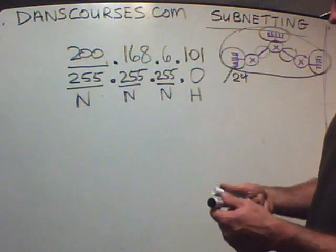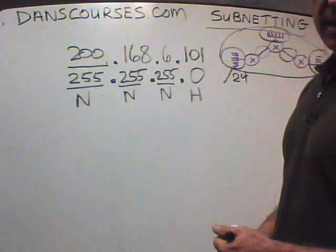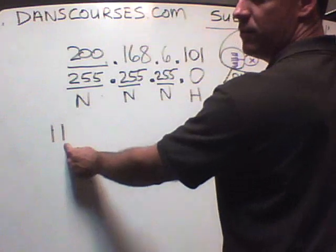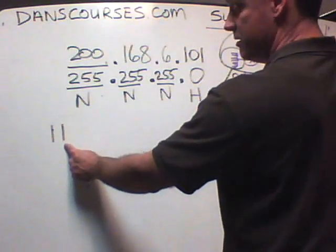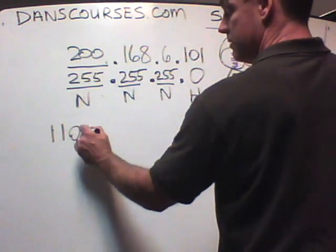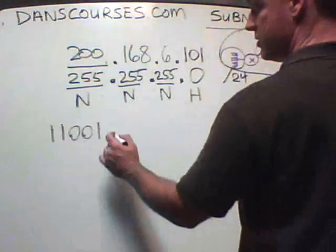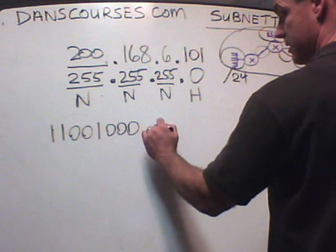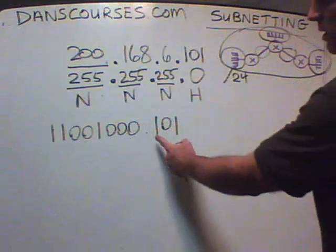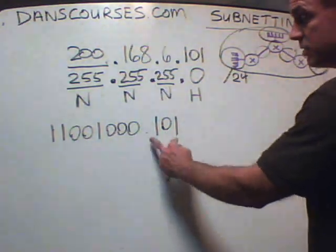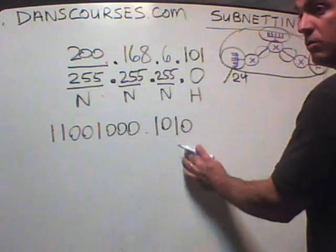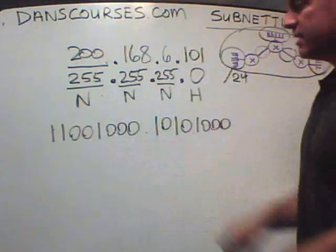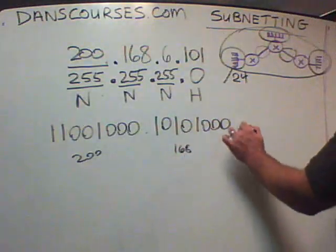We need to write the IP address and subnet mask out in binary. In binary, 200 is 11001000 — that's the 128-bit and 64-bit giving us 192, plus a zero, zero, one for 200. Then 168 is 10101000 — 128 plus 32 is 160, plus 8, giving us 168.